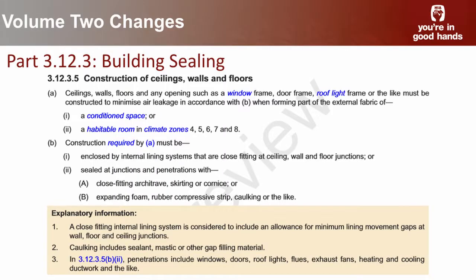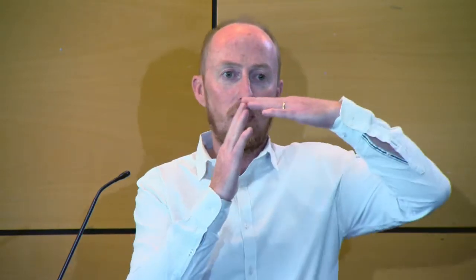Building sealing provisions already exist in the code. These apply on top of getting your six-star standard or your NatHERS star rating, or using the prescriptive elemental deemed to satisfy provisions, or under BASIX in New South Wales — these provisions apply in addition to getting your rating. They talk about using tight fitting between your junctions, using your ceilings to have tight fitting, square set cornices, seals next to windows and joins, seals to doors and things like that. So a lot of the stuff you're already doing is part of this section.